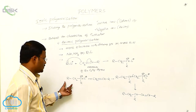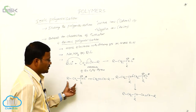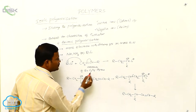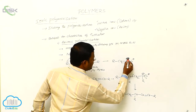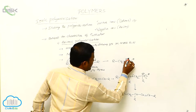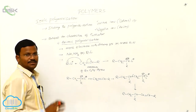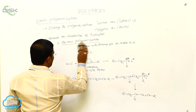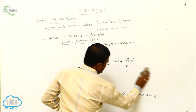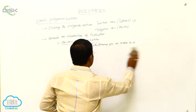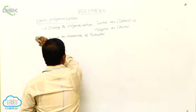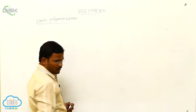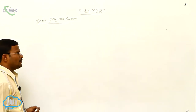This is the expected polymerization. In this polymerization, initiation takes place by negative species or anions. Hence it is called anionic polymerization. This is ionic polymerization under addition polymerization. The two types of addition polymerization are ionic polymerization and free radical polymerization. Ionic polymerization is further divided into cationic polymerization and anionic polymerization.